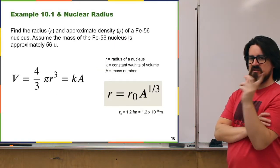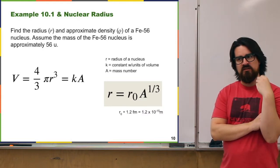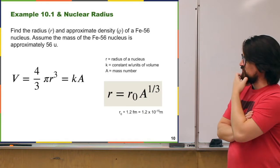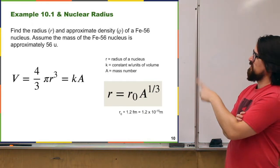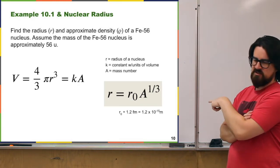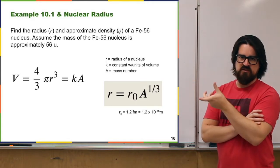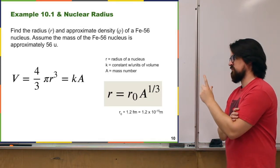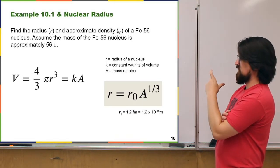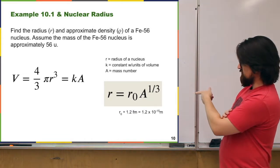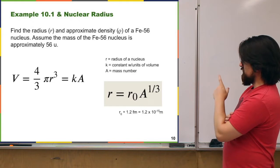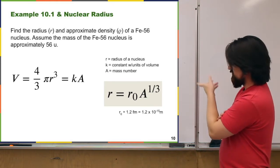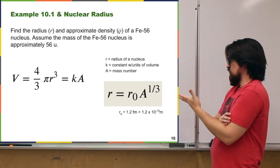You can approximate the size of a nucleus by noting that its volume grows with the atomic mass number A. Treating the nucleus as a sphere, the volume equals some constant times A. Solving for the radius r as a function of A, you get that the radius goes as the cube root of the mass number: r equals r₀ times A to the one-third power, where r₀ is approximately 1.2 femtometers. This is actually a fairly good approximation for the volume of nuclei.